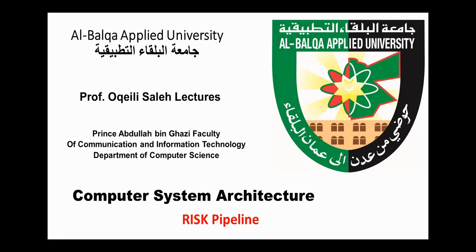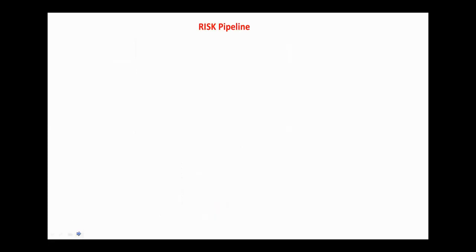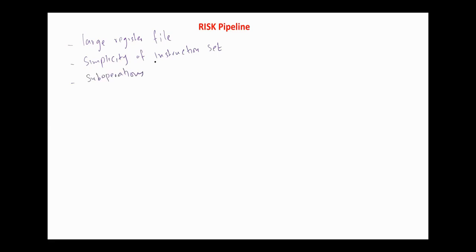Hello everyone, today we continue with the Computer System Architecture course. Our topic is RISC pipeline. In the previous videos we discussed parallel processing, pipelining, arithmetic pipeline, and the last video was instruction pipeline. In chapter 8 we discussed the main characteristics of RISC architecture, and they include large register file and simplicity of instruction set; sub-operations can be executed in one clock cycle.